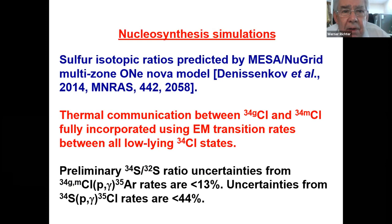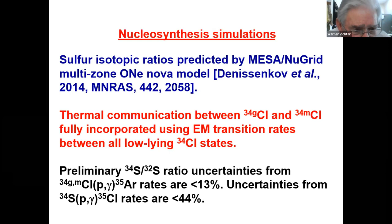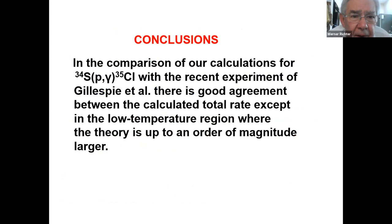Let's look at the nucleosynthesis part. The ratios were predicted by a rather large calculation using a new-grid multi-zone oxygen-neon nova model, done mainly by Denissenkov. Thermal communication between the ground and the excited states was incorporated. The preliminary ratio uncertainties ending in Argon-35 were less than 13%, with uncertainties from sulfur-34 to chlorine-35 being somewhat larger.